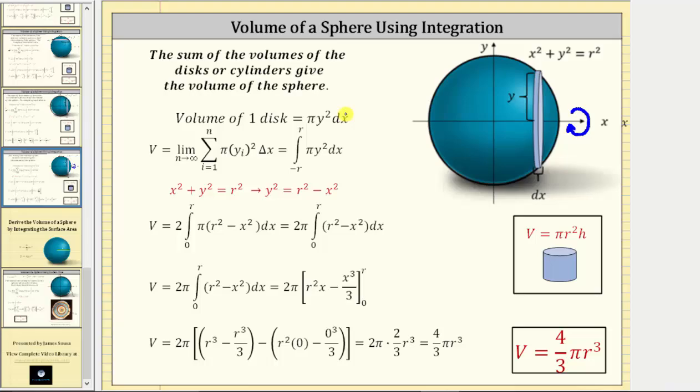From here, as the number of slices approach infinity, or the number of disks approach infinity, the sum of the volumes of the disks, or the right circular cylinders, will approach the volume of the sphere.